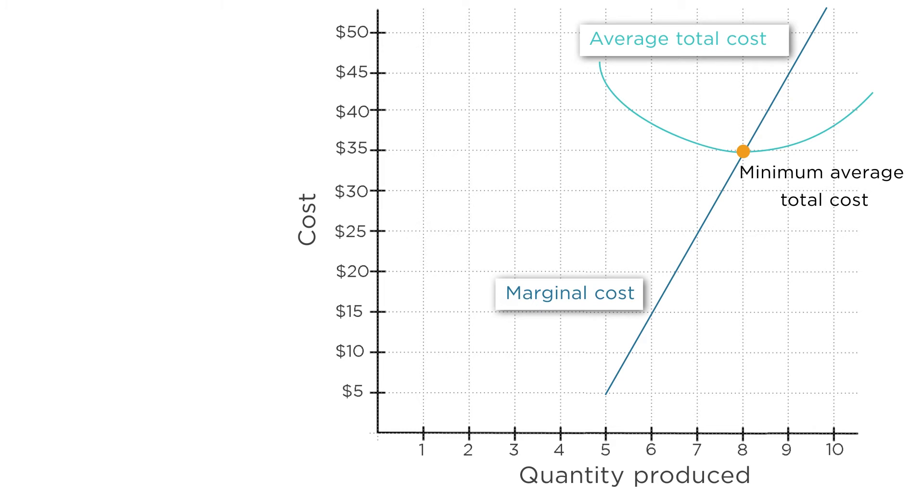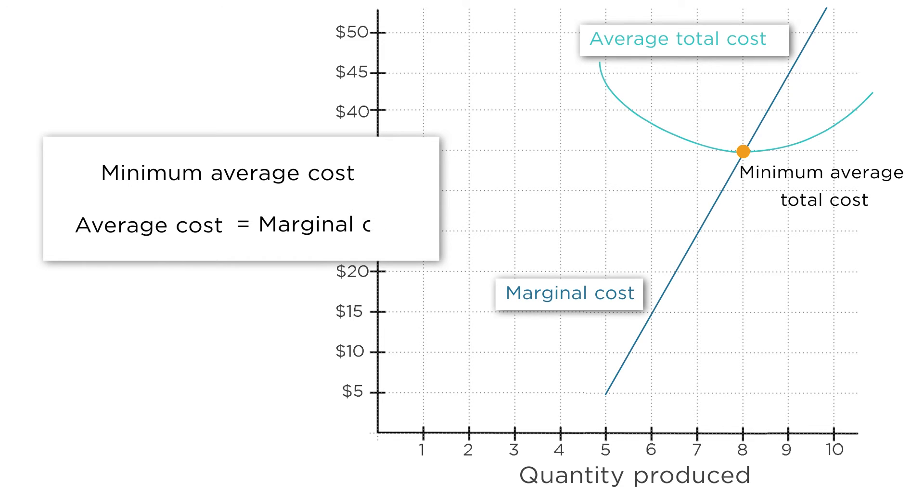If marginal costs are rising, and we generally assume they are, the minimum average total cost is where average cost equals marginal cost. This is because average total cost rises more slowly than marginal cost. If average cost is greater than marginal cost, a firm can drive down the average cost by producing more. This has the effect of lowering the average fixed cost more than it increases the average variable cost.